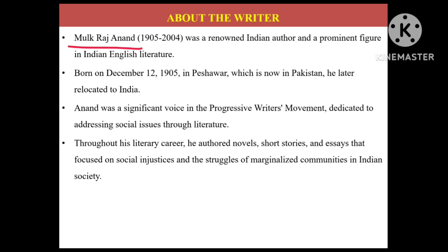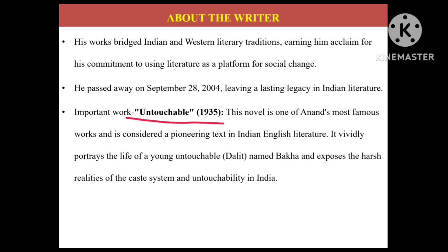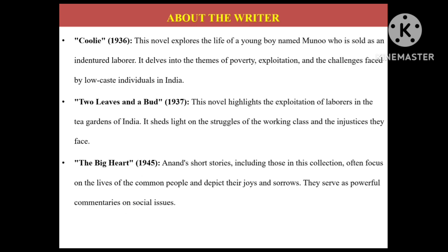He was born in Peshawar, India and he writes more on marginalized communities. Please remember his work Untouchable, which was published in the year 1935 and this was his first work. Next was Coolie, published in the very next year 1936, and this is an extremely heart-touching story of a little boy who is just 14 years of age. His name is Munnu. Please keep in mind the name of the protagonist and the year of publication. Next is Two Leaves and a Bud. Please keep in mind these important points which I have discussed in video one.